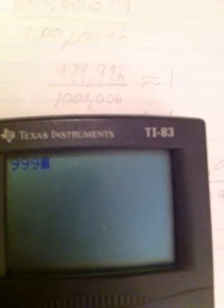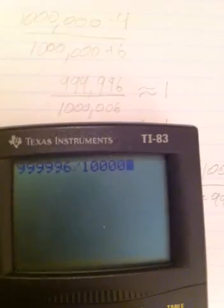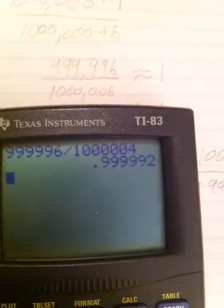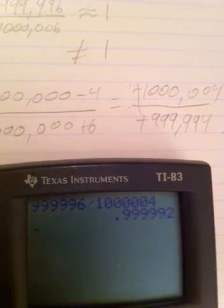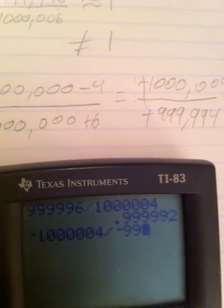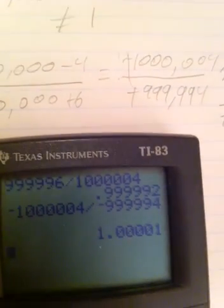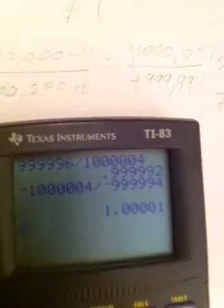In fact, I'm going to try to plug these numbers into the calculator. 999,996 divided by 1,000,006. Notice it's really close to 1, but it's just shy of 1. And we'll try this one as well. Negative 1,000,004 divided by negative 999,994. Again, it's really close to 1, but it'll never get to 1.